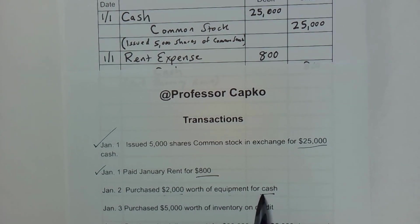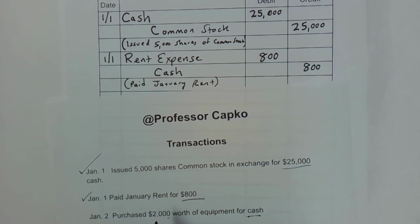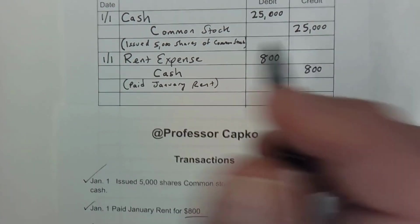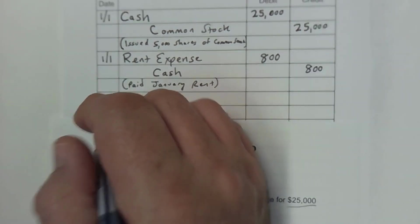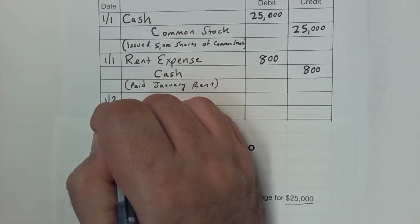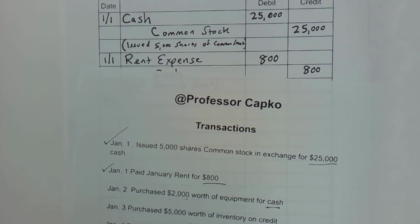We're paying cash out, so that means our cash is going down. We're going to credit cash. So I need to know what the debit's going to be. I'm going to go ahead and put the date here — January 2nd, so 1-2. And we purchased equipment.